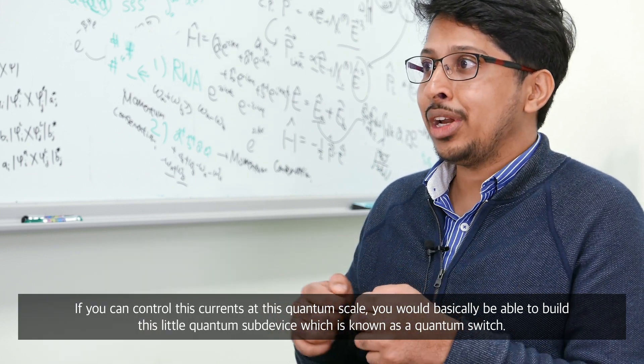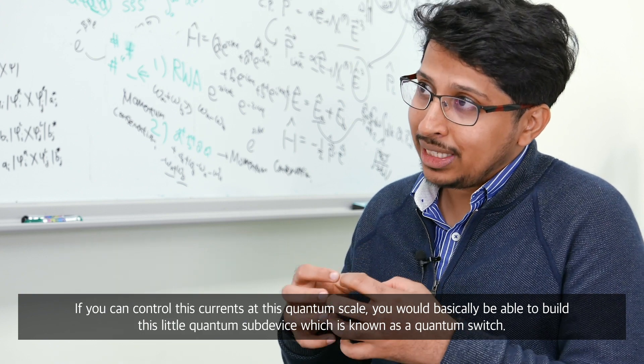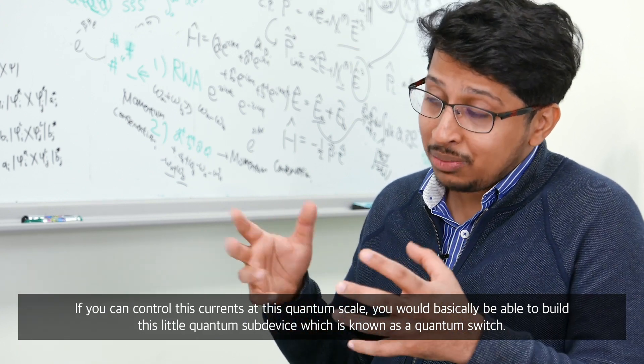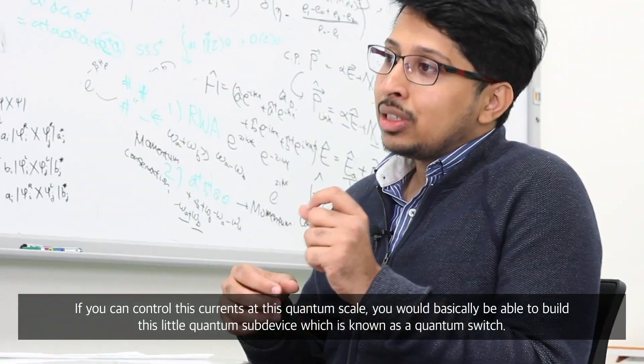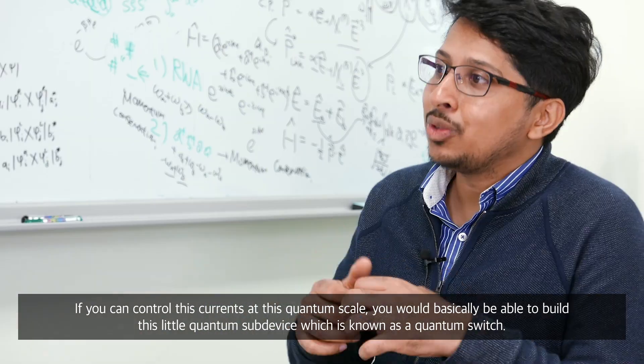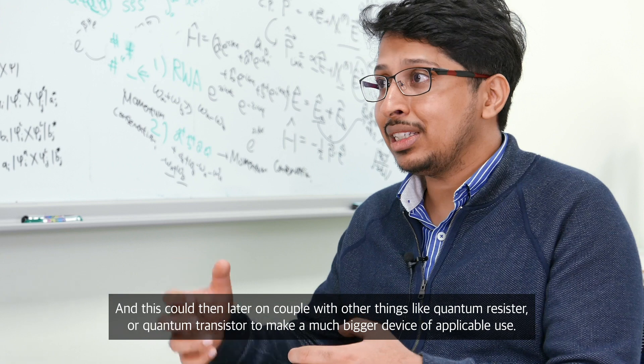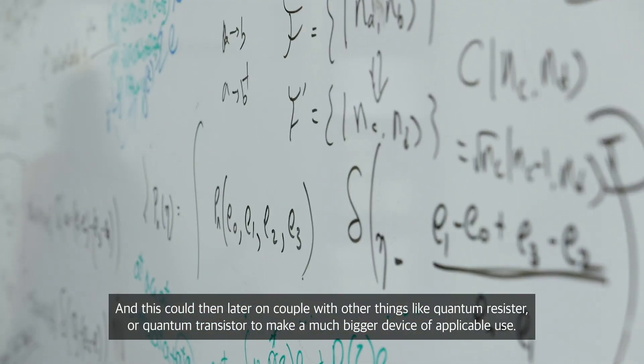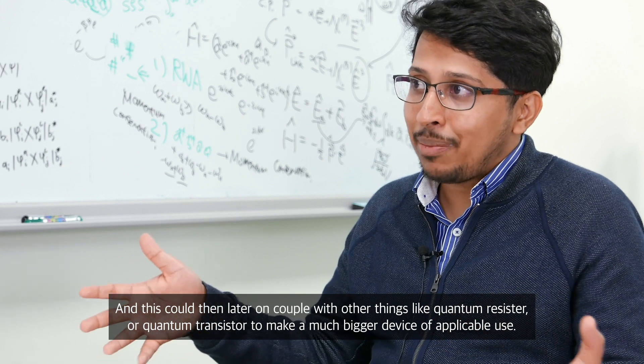And if you can control these currents at this miniature scale or this quantum scale, you would basically be able to build this little quantum sub-device which is known as a quantum switch. And this could then, later on, couple with other things like a quantum resistor or quantum transistor to make a much bigger device of applicable use.